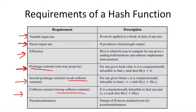Strong collision resistance is when it is computationally infeasible to find a pair of inputs X and Y such that their hash values are the same. For a hash function to be strongly collision resistant, it should be able to protect against birthday attacks, which we will discuss shortly. The last requirement is that the hash values produced by the hash function must be pseudorandom, meaning they should have a uniform distribution and be unpredictable.